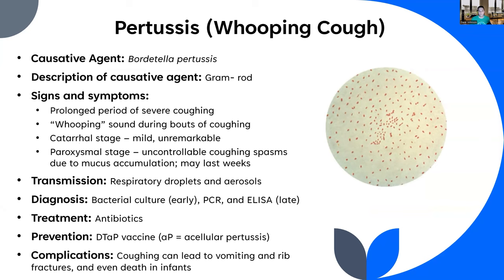The early stages are called the catarrhal stage — mild and unremarkable. You may notice a pronounced runny nose and general malaise. But the giveaway is the paroxysmal stage: uncontrollable coughing spasms resulting from mucus accumulation. This is where they start making that whooping sound as they try to work the mucus up, and this can last for weeks.